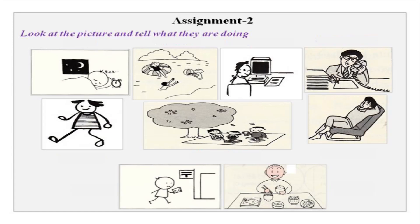The next exercise: you have pictures and you need to say what they are doing in Japanese. The verbs are: nemasu, asobimasu, benkyoshimasu, shigotoshimasu — you could also say denwashimasu or kakimasu. For asobimasu you could also say oyogimasu.